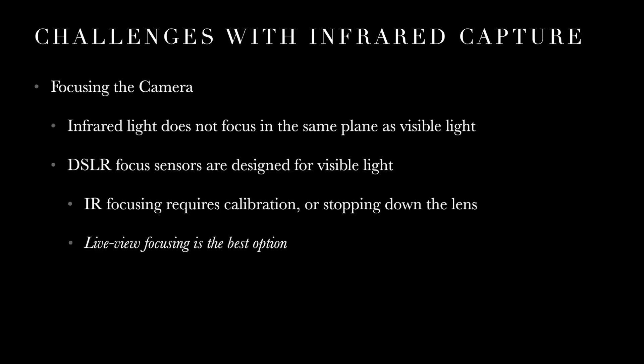Now let's talk about the challenges with infrared capture. First is focusing. Infrared light doesn't focus in the same plane as visible light, and lenses are designed for visible light — manufacturers simply aren't making lenses for infrared photography. On a DSLR, the focusing sensors behind the mirror are calibrated for visible light. Some people stop the lens down to compensate, but the best option is to put your camera into live view — that way the mirror is up and the sensor itself is used for focusing.